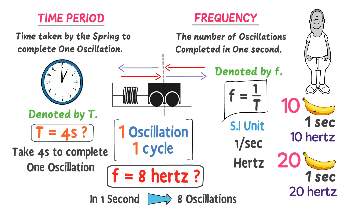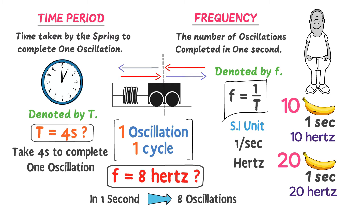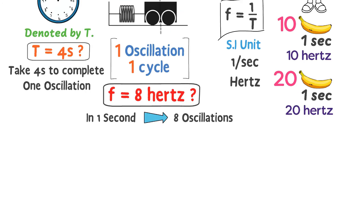To summarize: time period is defined as the time taken by the mass to complete one oscillation, while frequency is defined as the number of oscillations completed in one second.